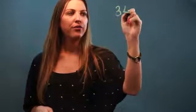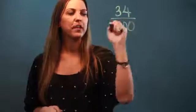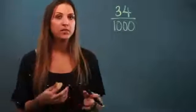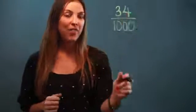If you have a fraction like 34 over 1,000, the first thing we need to do is make this fraction into a decimal. The thousand tells me that the four is going to end in my thousandths place as a decimal.